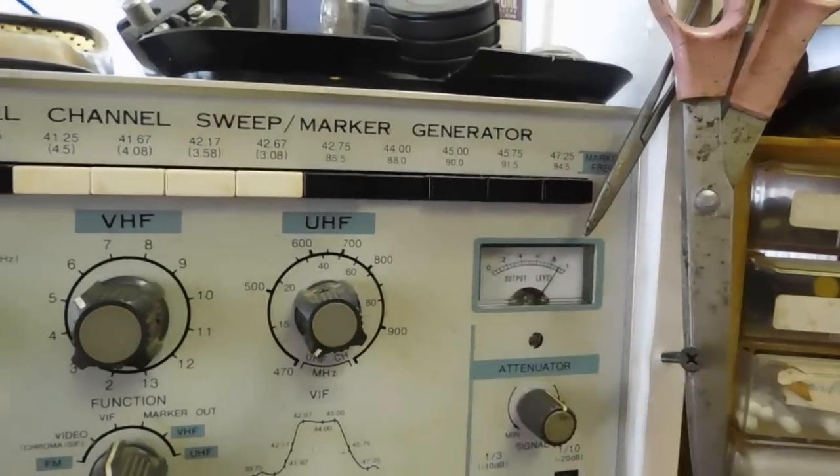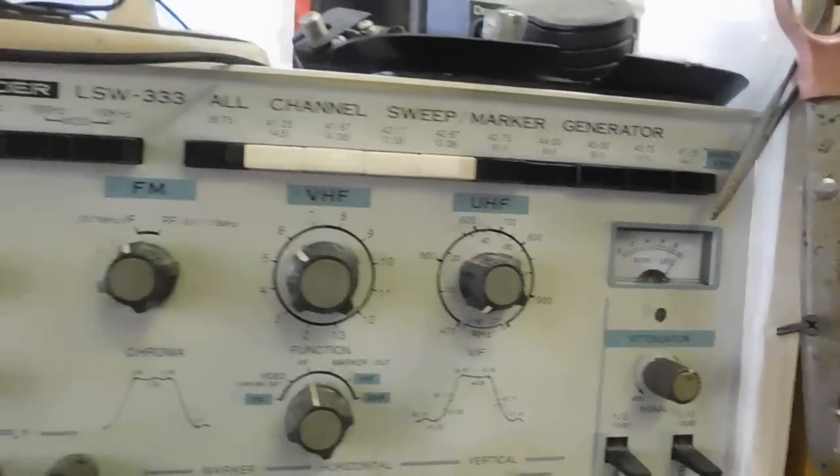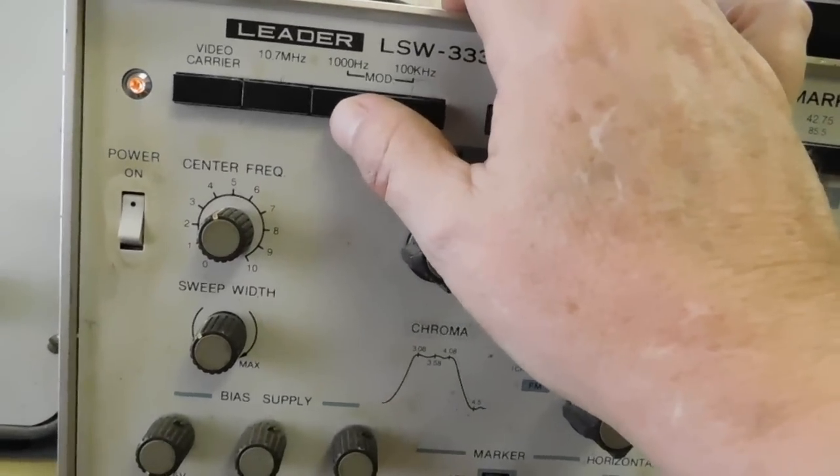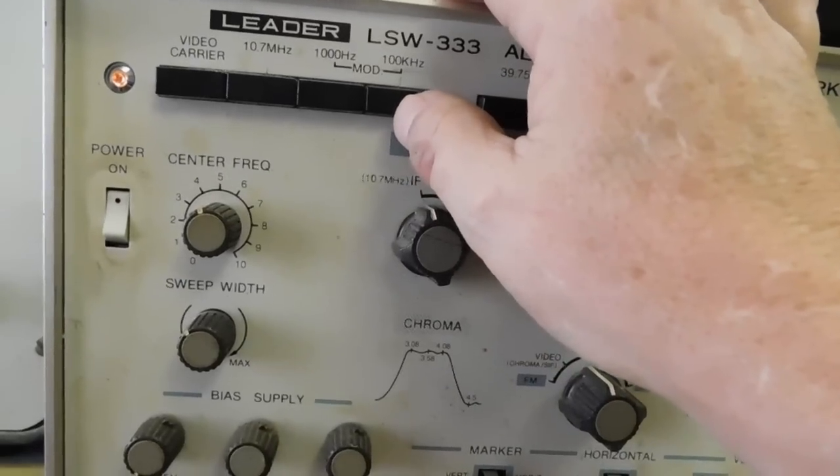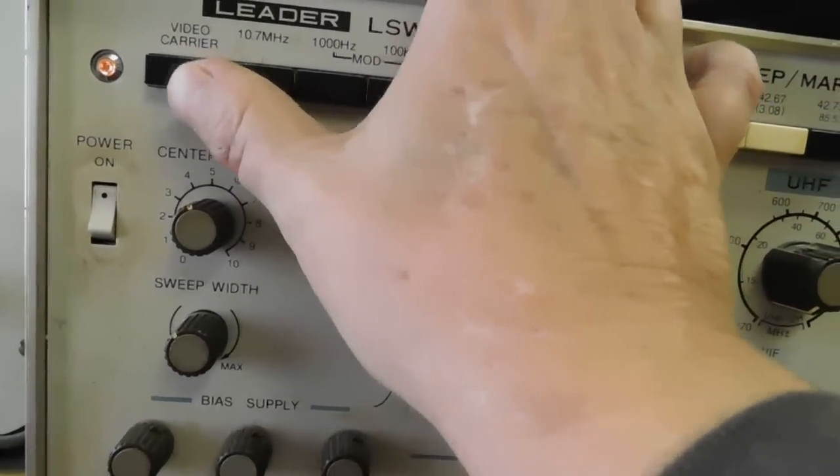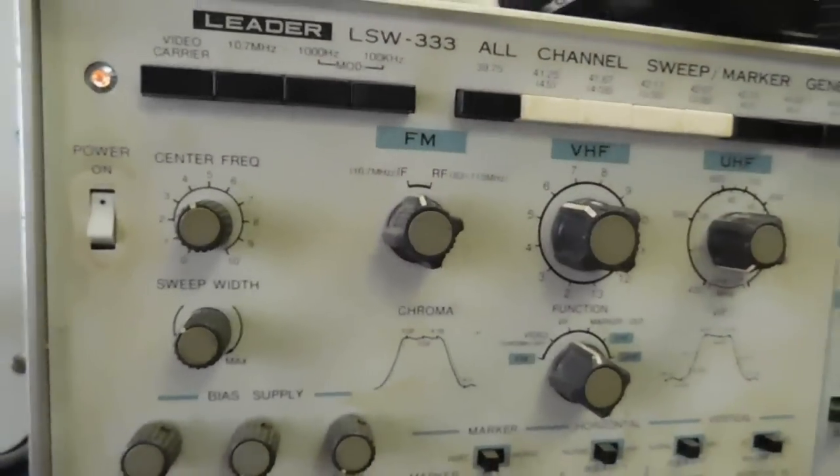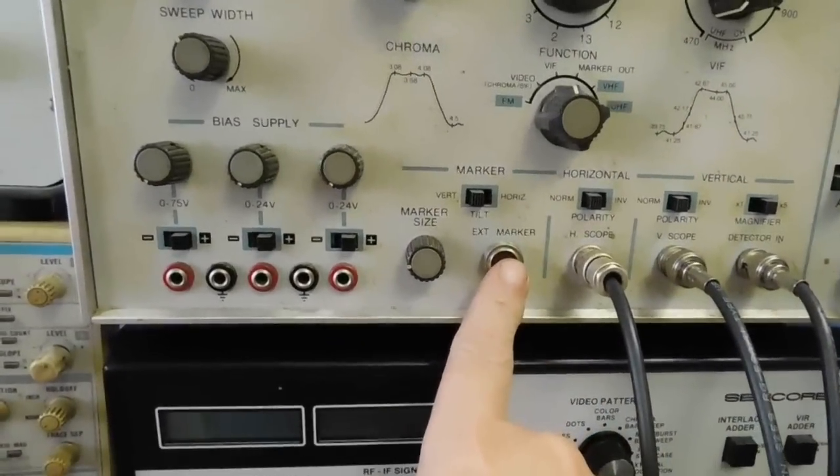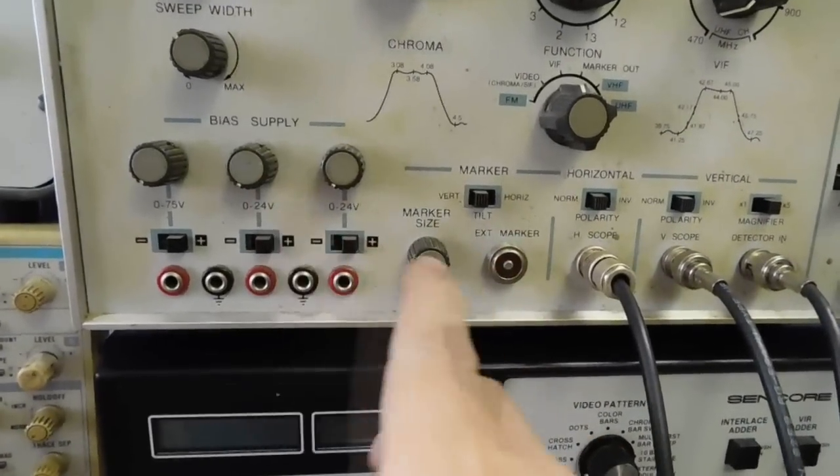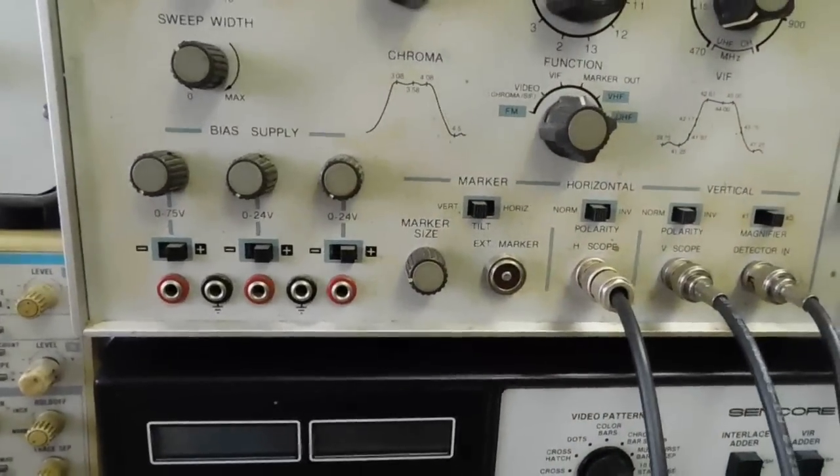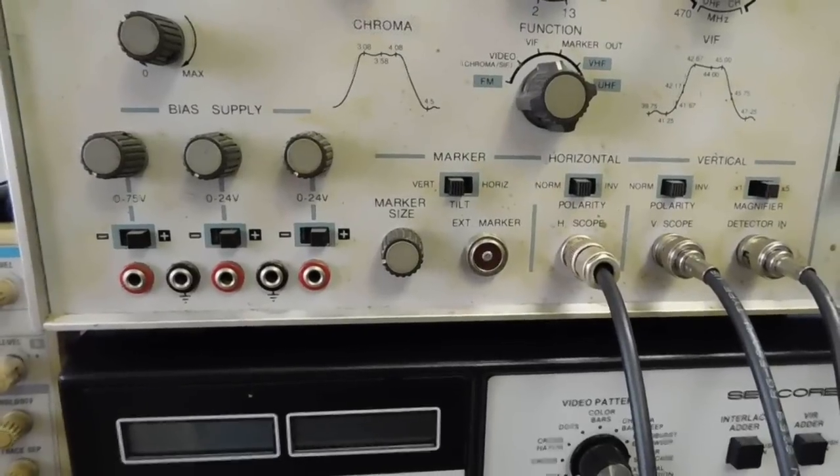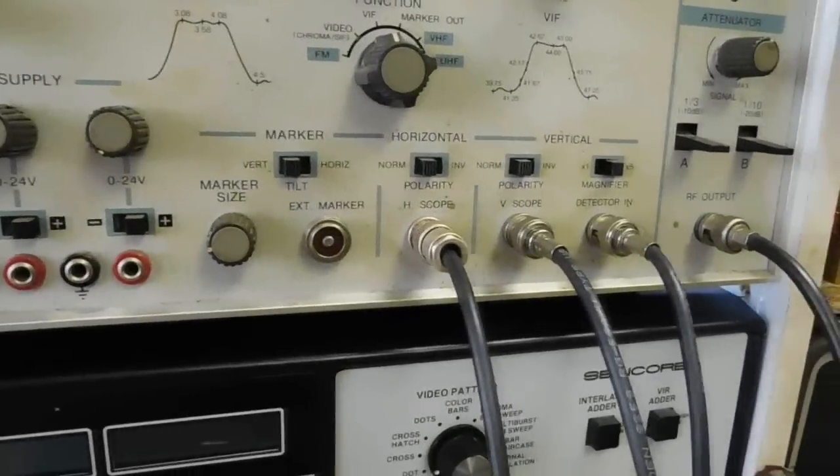There is the modulation. It can be modulated 1000 Hertz or 100 kilohertz, a video carrier, and then 10.7 megahertz marker. You can also feed an external marker in here from another generator. And that way you can use markers or some of the markers you may require that is not fixed. You can actually set those.